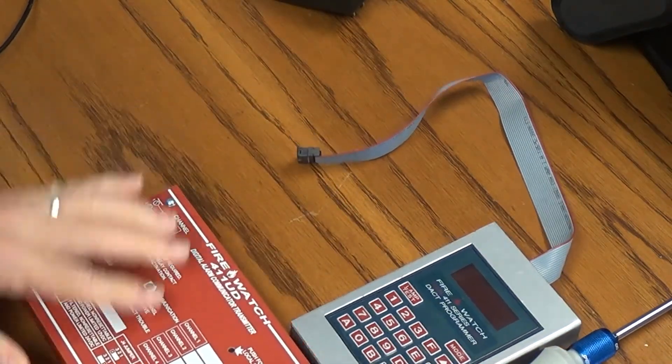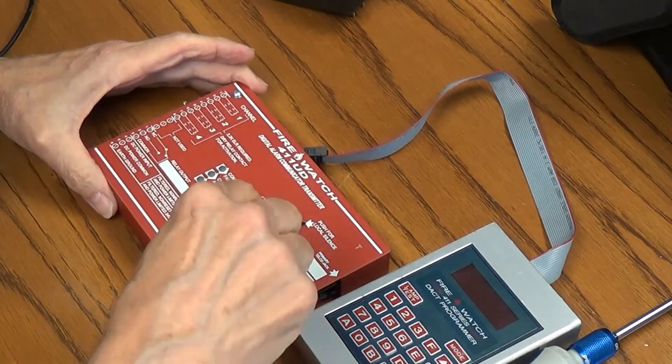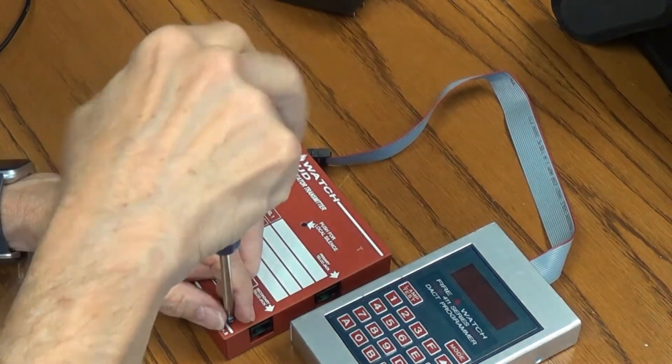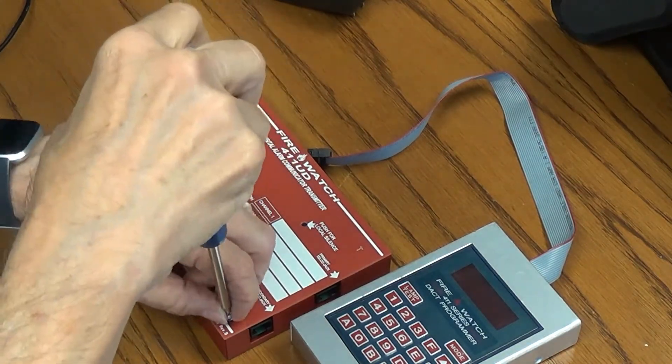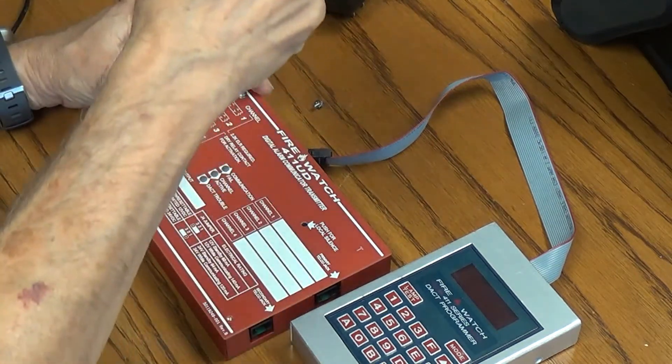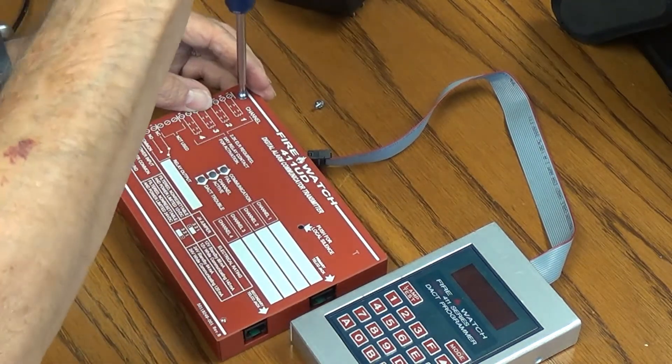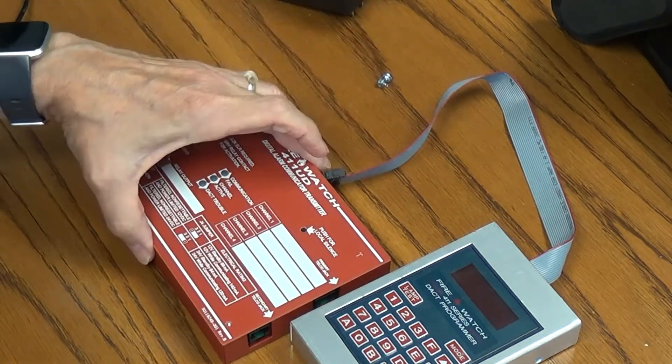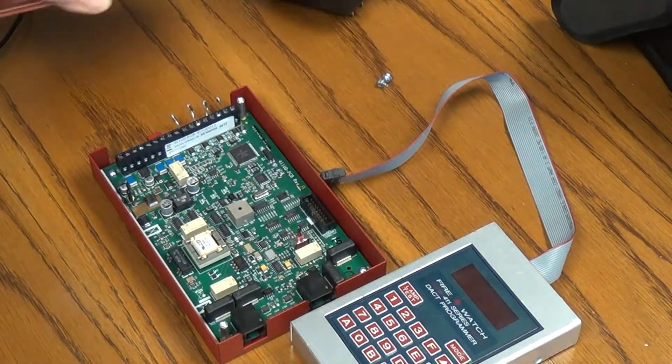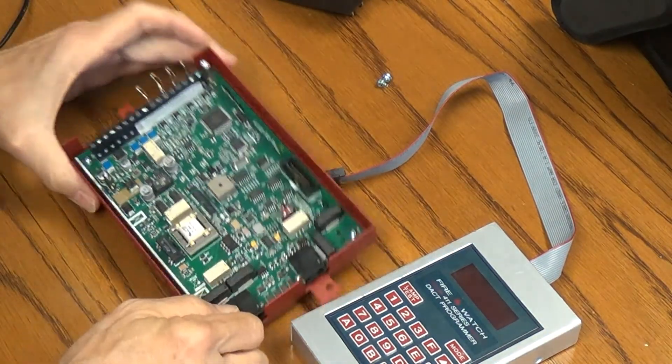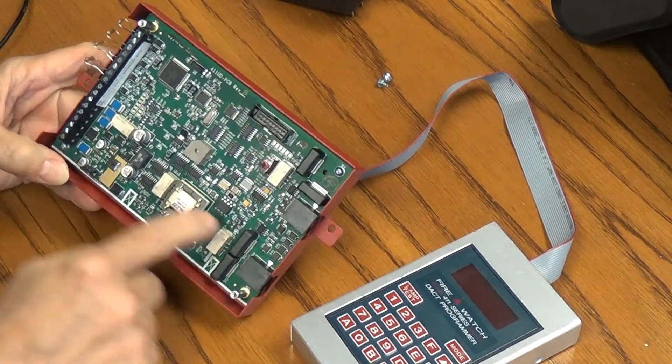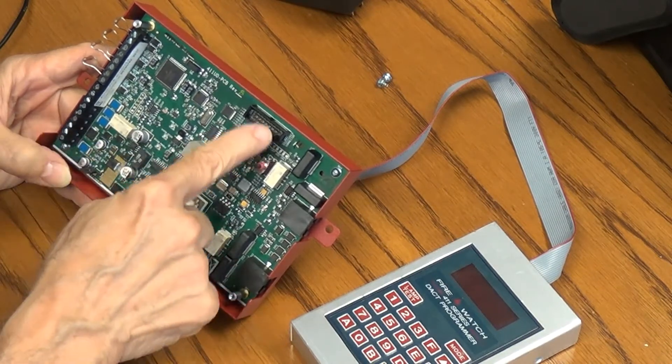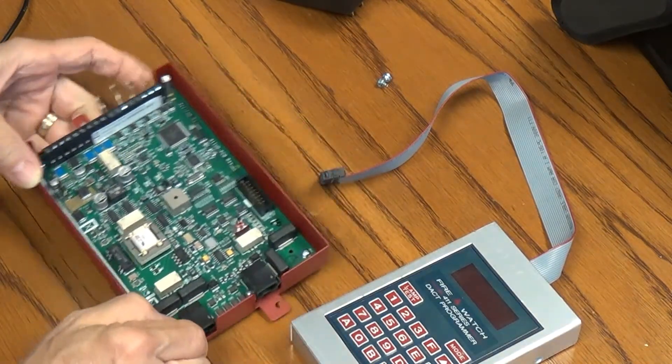First thing we're going to do is remove the panel on the 411 dialer, and I'm going to use my Phillips for that. Some of these units have captive screws, some don't. This one doesn't, so you just have to unscrew them and keep that in a safe place. And the panel comes off.